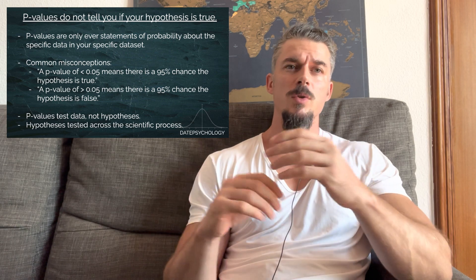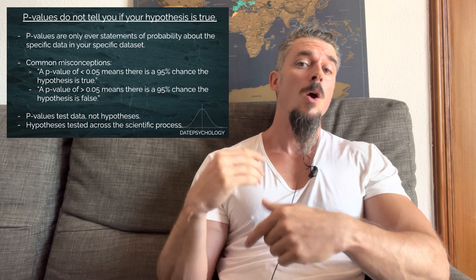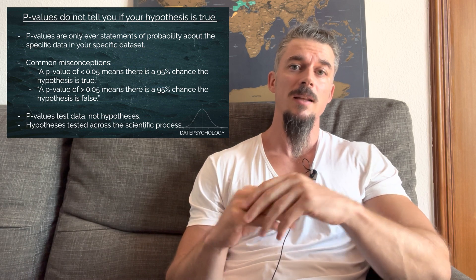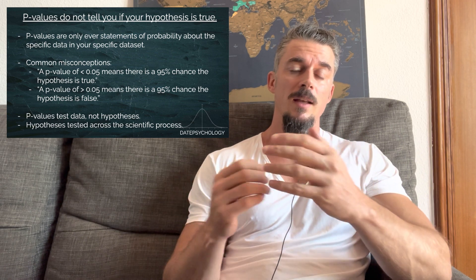A couple of misconceptions in the way this is commonly presented: you see a p-value of less than 0.05, statistically significant, and people will say that means there's a 95% chance that the hypothesis is true. No, it doesn't mean that. The opposite as well — a p-value greater than 0.05 and people will say there's a 95% chance that the hypothesis is false, or even that there's a 95% chance the null hypothesis is true. Both incorrect. P-values tell us how likely that result is given the assumption that the null was true. P-values test data, not hypotheses.